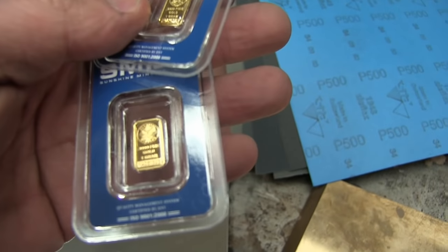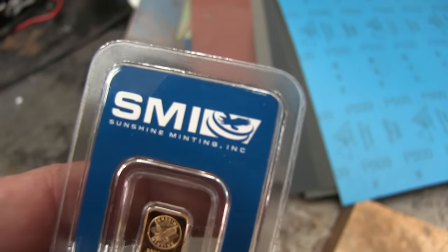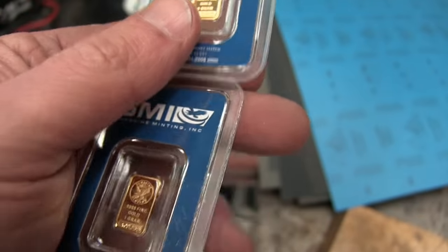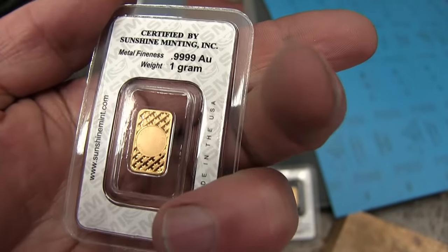We have one gram each of fine gold. You know what I'm saying, sunshine minting. I'm wondering if this is something to do with the sunshine mine in Coeur d'Alene, Idaho.